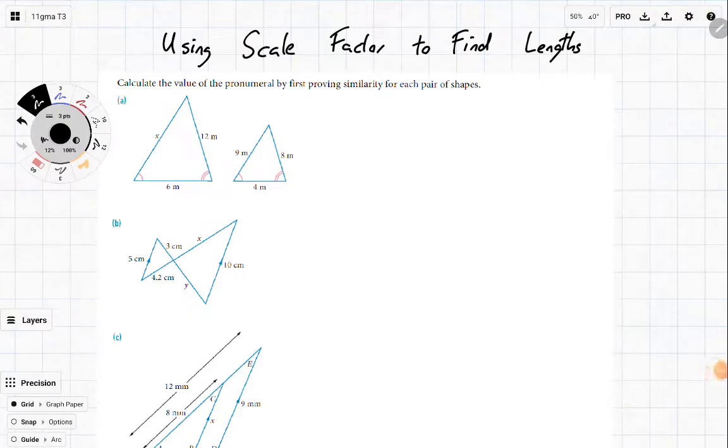So today we're going to be playing around with scale factor a little bit more and just seeing what we can get done. We're going to be having a play with some of these shapes and we're going to be seeing if we can work out the value of the pronumeral by first proving similarity for each pair of shapes.